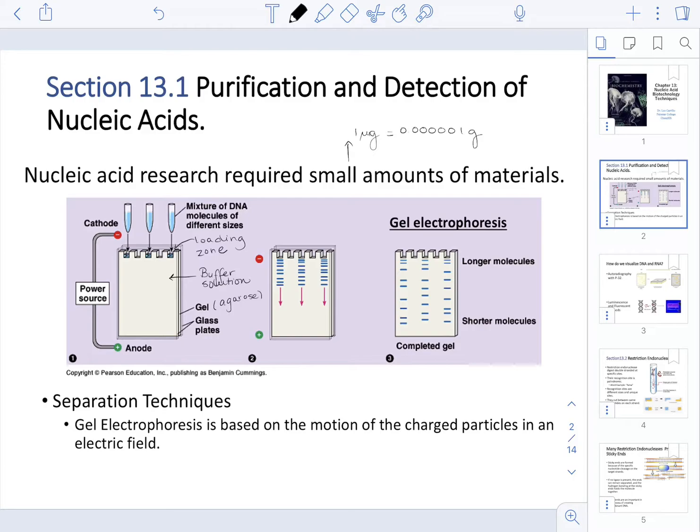So in gel electrophoresis, we are going to apply a current to our gel that is sitting in the buffer solution and we already have our samples loaded in. Once this current has been applied, as you can see, this is going to separate sample by size and they're going to look like bands.